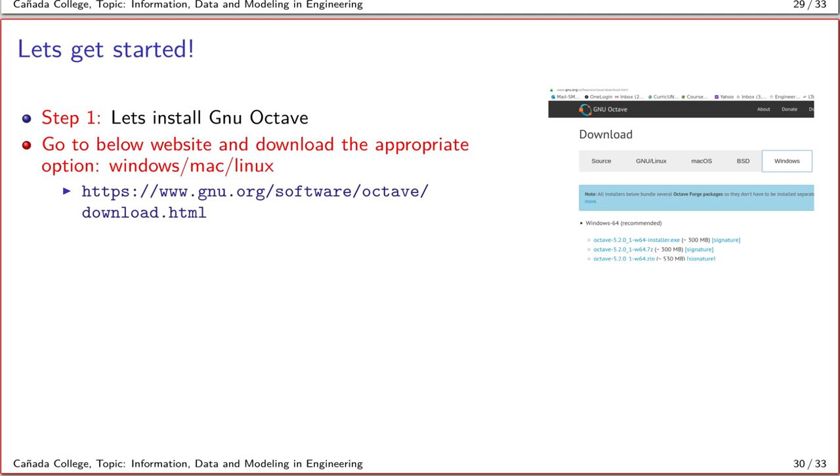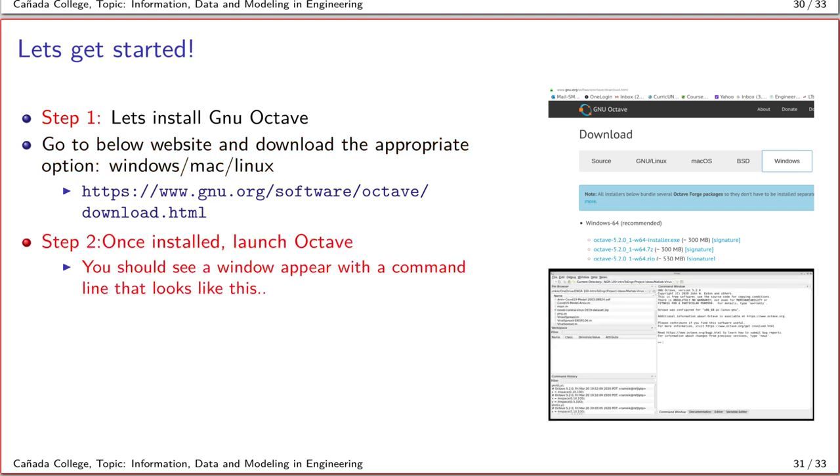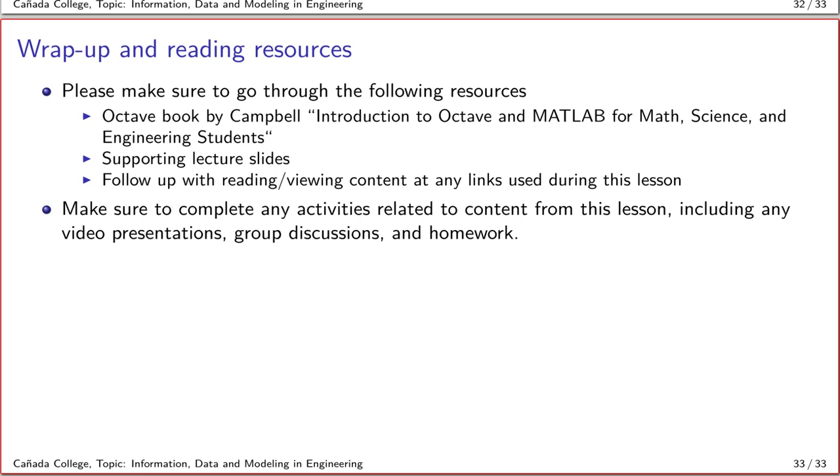So let's get started. First, make sure you install GNU Octave. I've provided the link here for the website. Please make sure that you install it, and once it's installed, when you run it you should be able to see a command window that appears that looks like this. If you've reached this stage, congratulations, we are ready to actually explore Octave, which we will do in the next lesson.